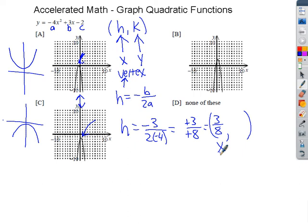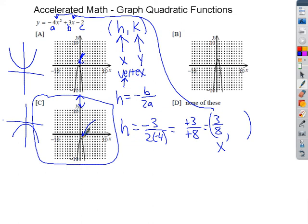I can go ahead and calculate the K value. The way you do that is you take that 3 eighths and plug it back in up here. That's quite messy with a fraction like that. It's very doable, but probably the easiest way is to grab your calculator and plug it in. I want you to notice that this graph down here, C, 3 eighths would be somewhere over there. But this one, the X value of letter A is on the negative side, so it has to be C.